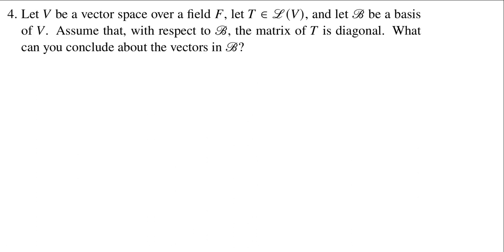Alright, this is a reasonably simple conceptual question. We're given a vector space V over a field F. We have a linear operator T on V. We have a basis B. And we're assuming that with respect to B, the matrix of T is diagonal.